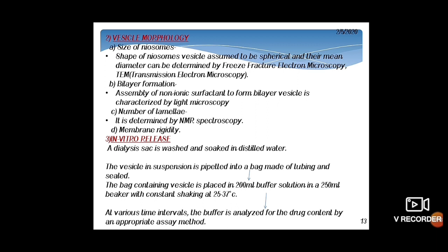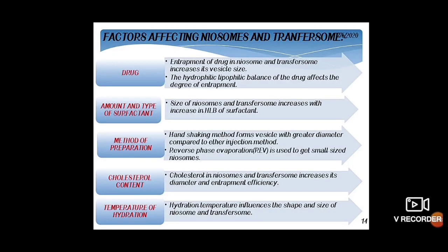For the in vitro release procedure, a dialysis sac is washed and soaked in distilled water. The vesicle suspension is pipetted into a bag made of dialysis tubing and sealed. The bag is placed in 200 ml buffer solution in a 250 ml beaker with constant shaking at 25–37°C. At various time intervals, the buffer is analyzed for drug content by an appropriate assay method.